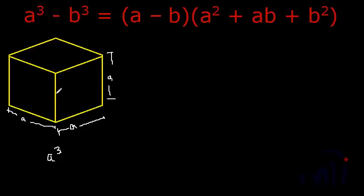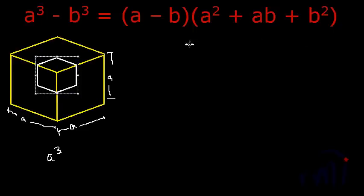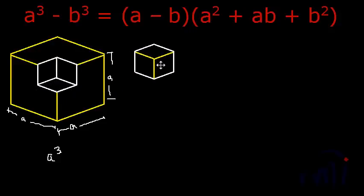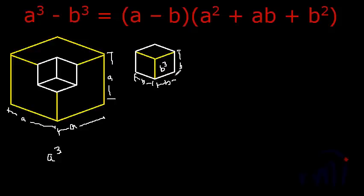So let me remove a cube of dimension B by B by B from here. That means this is B, this is B, this is B. So this is the cube of dimension B by B by B, and if I remove it, this becomes A cube minus B cube. This is B cube — it's a cube of dimension B by B by B and its volume is B cube. So this is B cube and the remaining portion is now A cube minus B cube.